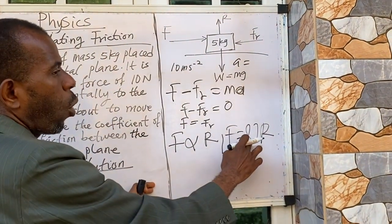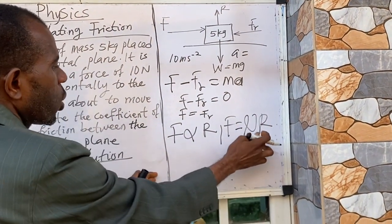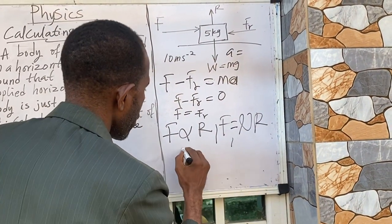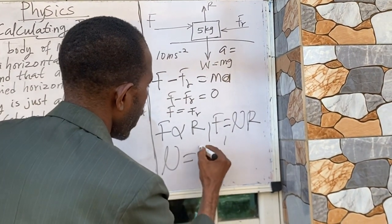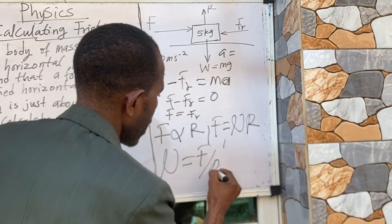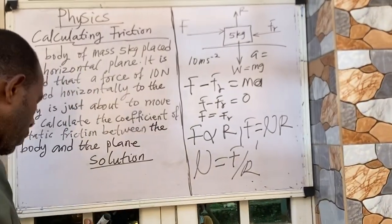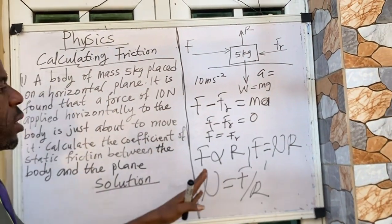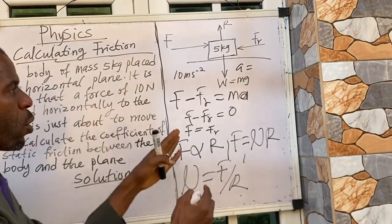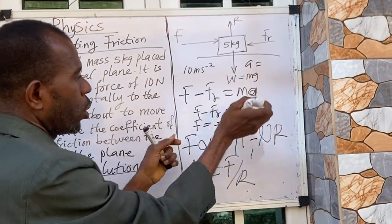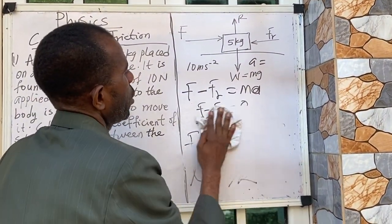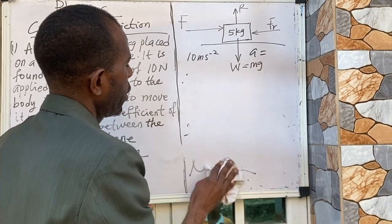So here remember we say that in this case your F now become equal to μR. This μ is the coefficient of static friction. This is what we are looking for. So this μ here is equal to F over R. Are you getting it now? So all these things is just for illustration for you to understand what is happening on this body.